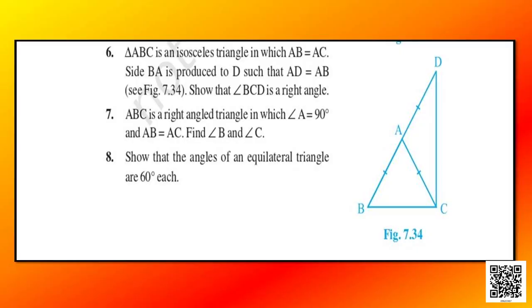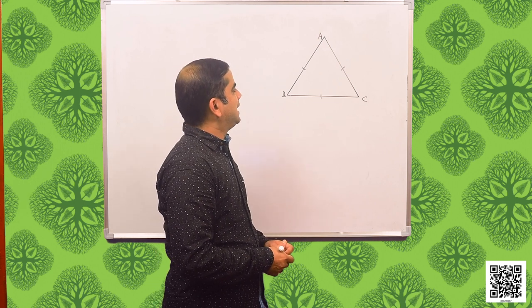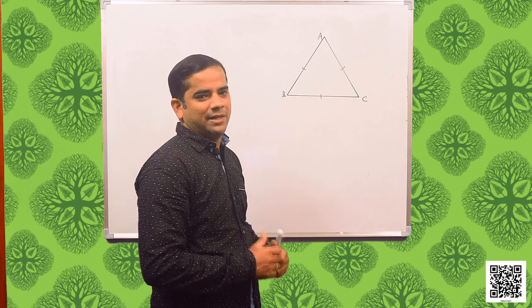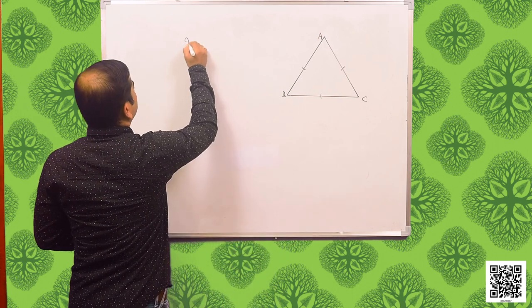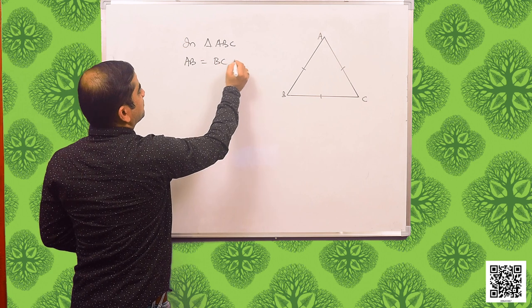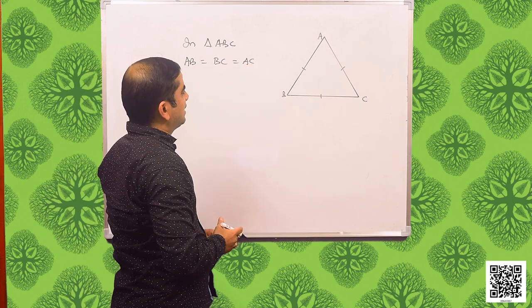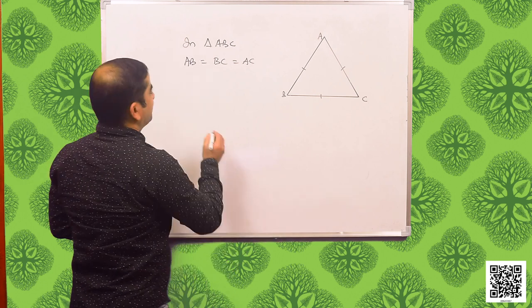Let us now discuss question number 8. It says: show that the angles of an equilateral triangle are 60 degrees each. We will go for the solution. I have drawn an equilateral triangle ABC where AB, AC, and BC sides have equal length. In triangle ABC, AB is equal to BC is equal to AC. Let us take pairs of sides and find the corresponding angles.